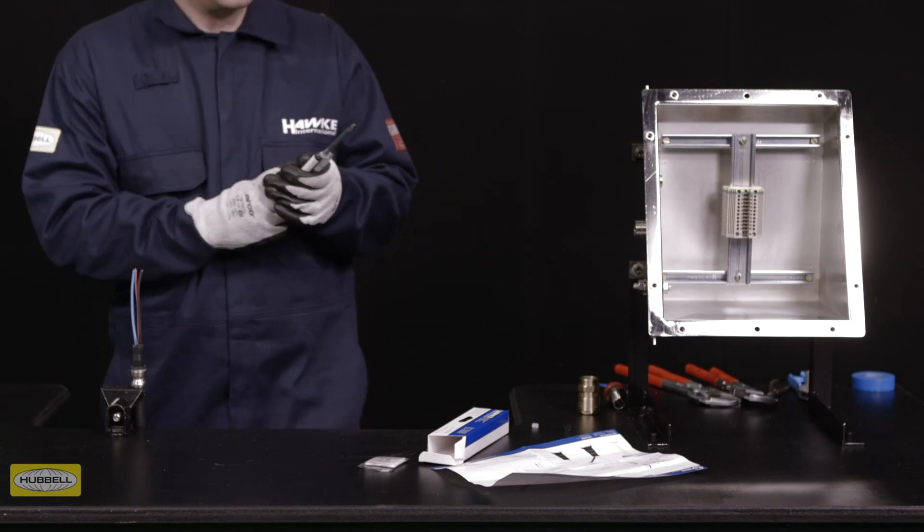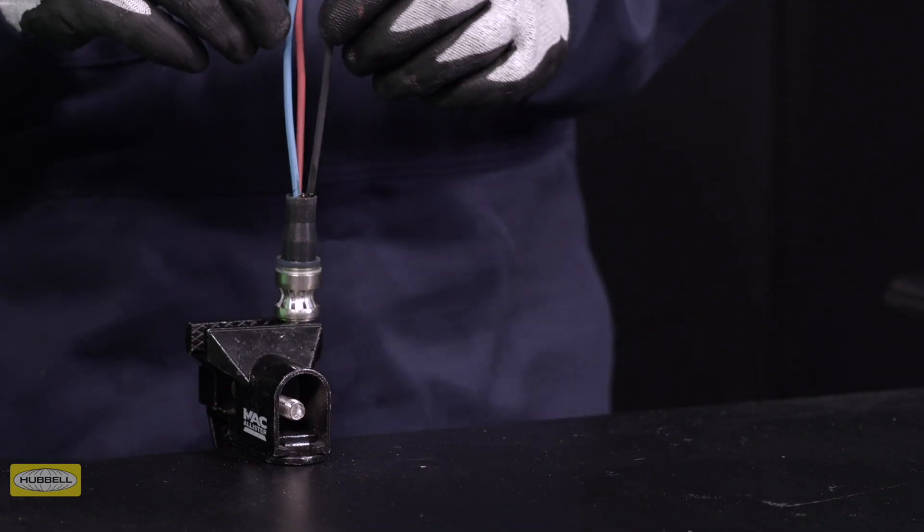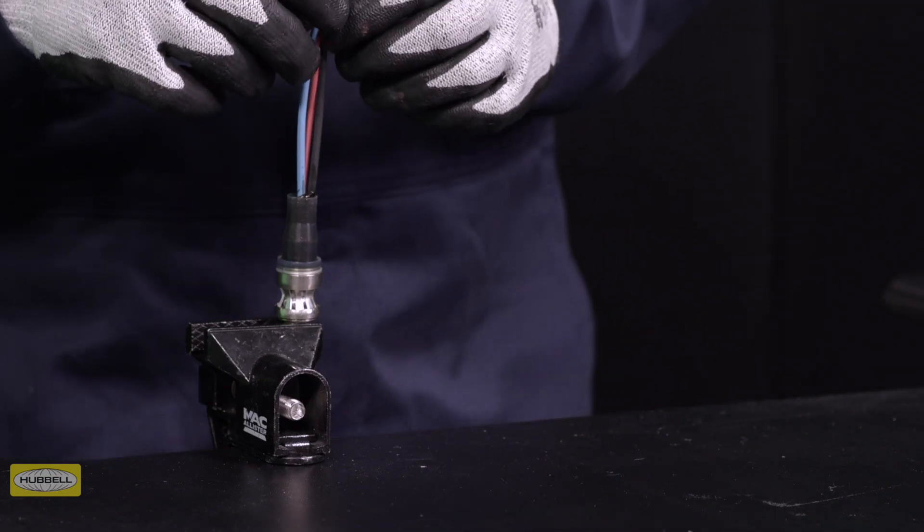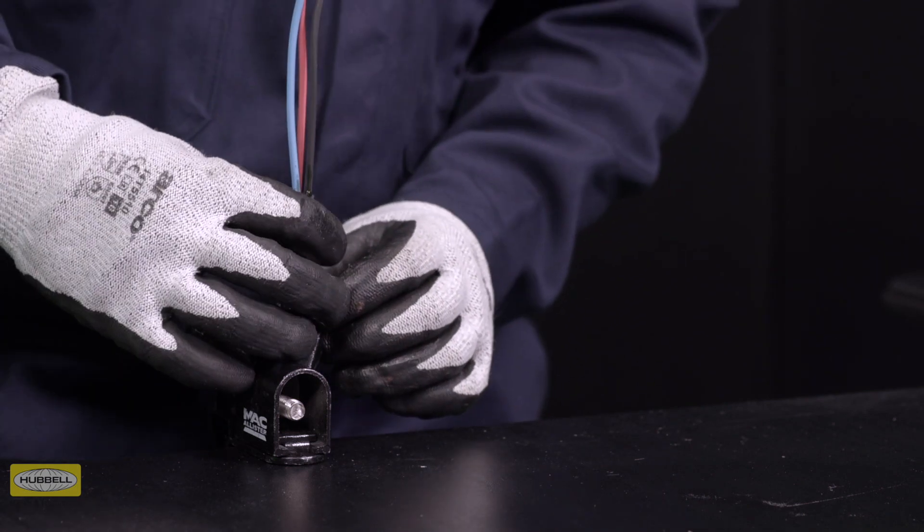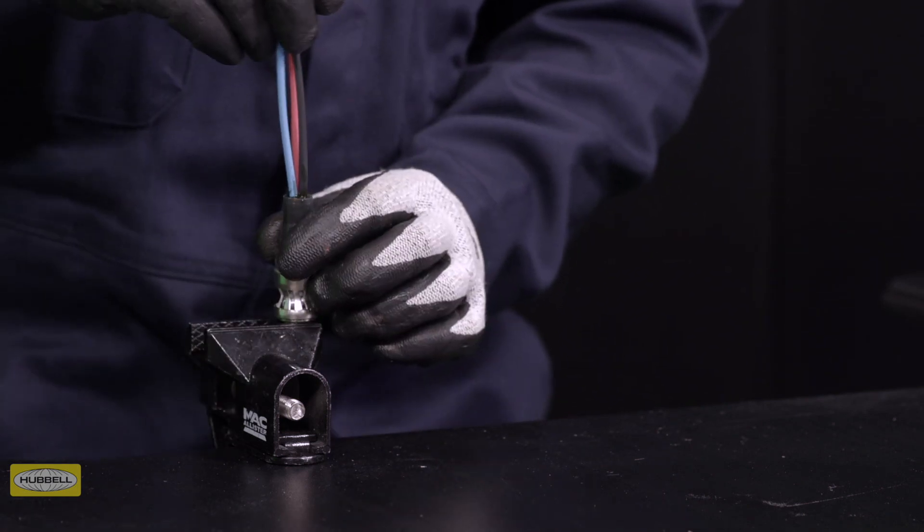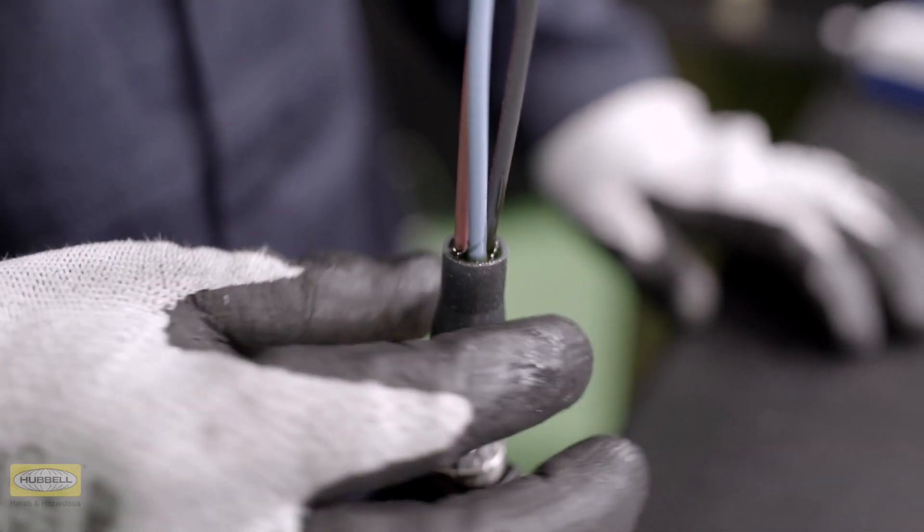Check that the resin is properly filled without any voids. Manipulate the cable cores to ensure the resin has filled any voids between them. If air pockets are present, coax them out from the resin by manipulating the silicon pot.